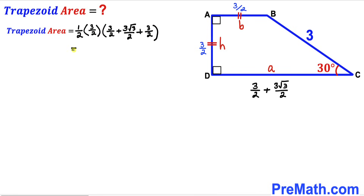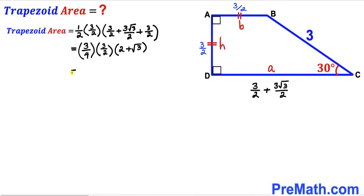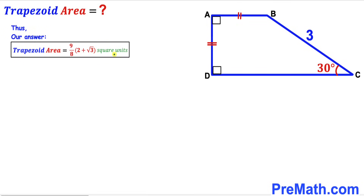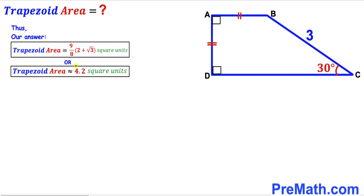Multiplying 3/4 by 3/2 gives 9/8. Therefore, the area of trapezoid ABCD is (9/8)(2 + √3) square units. This is approximately equal to 4.2 square units. That's our final answer.